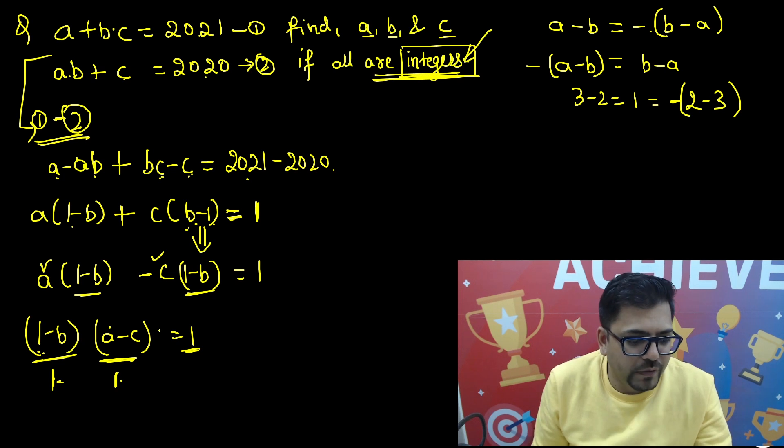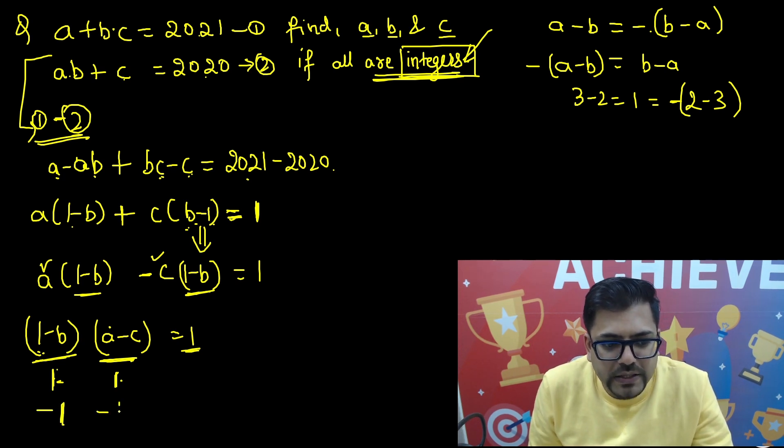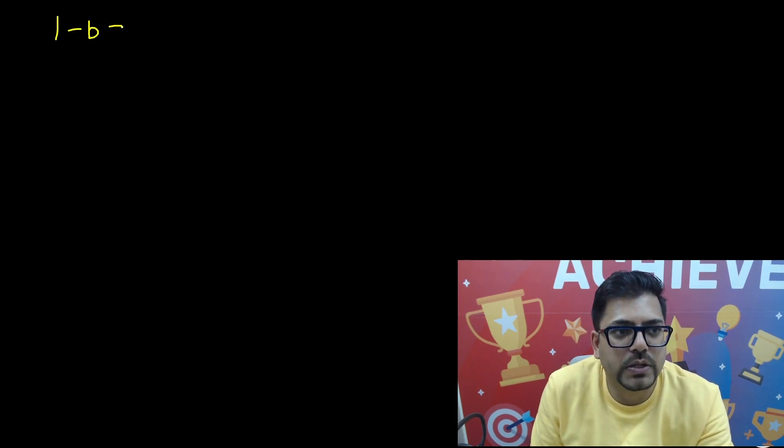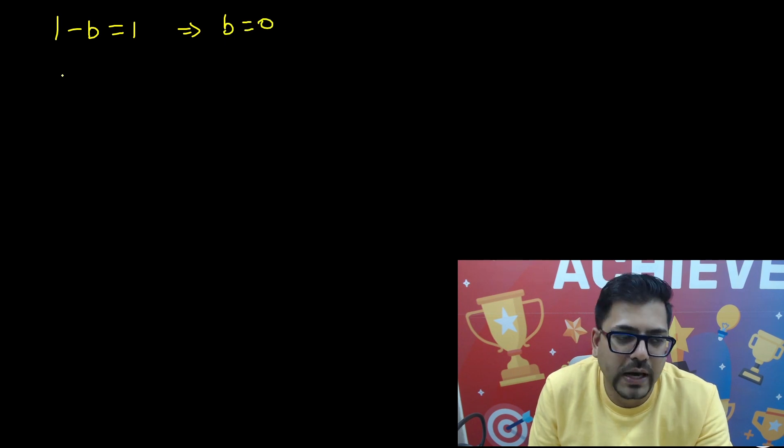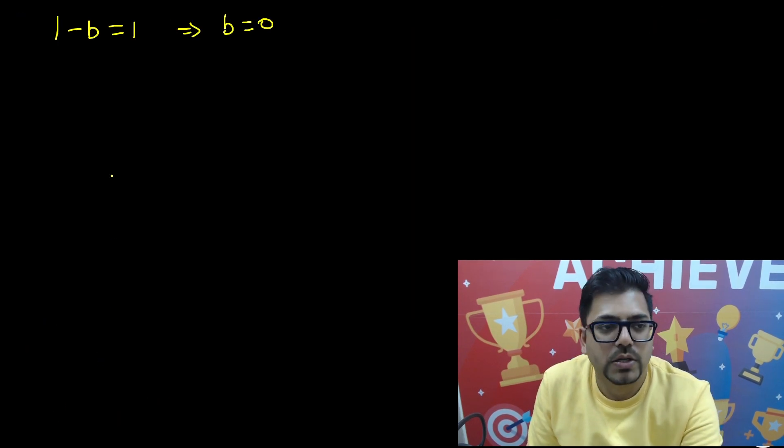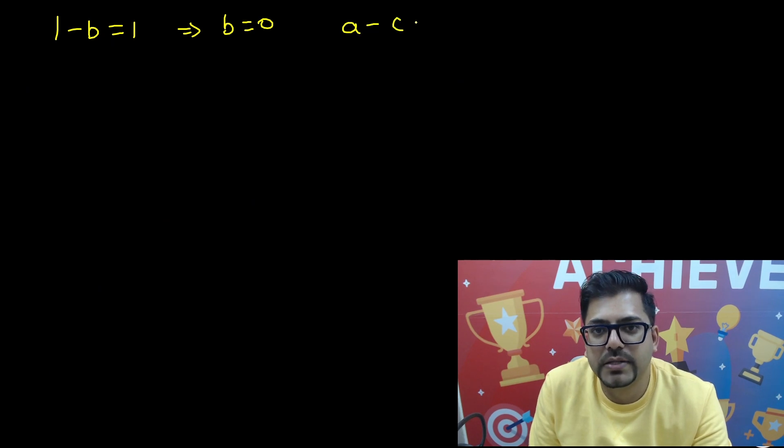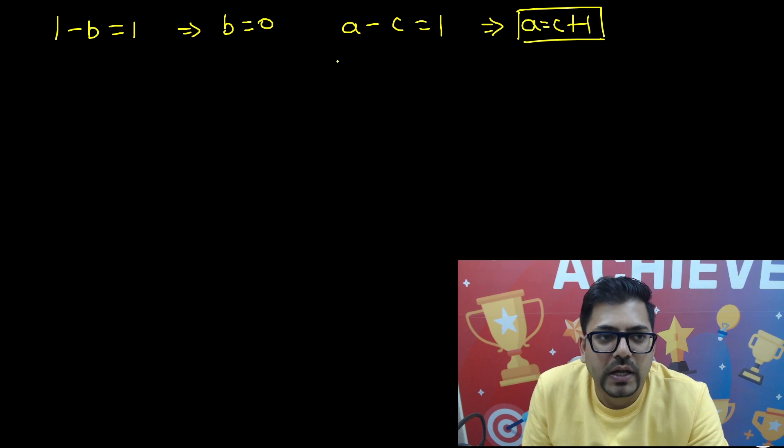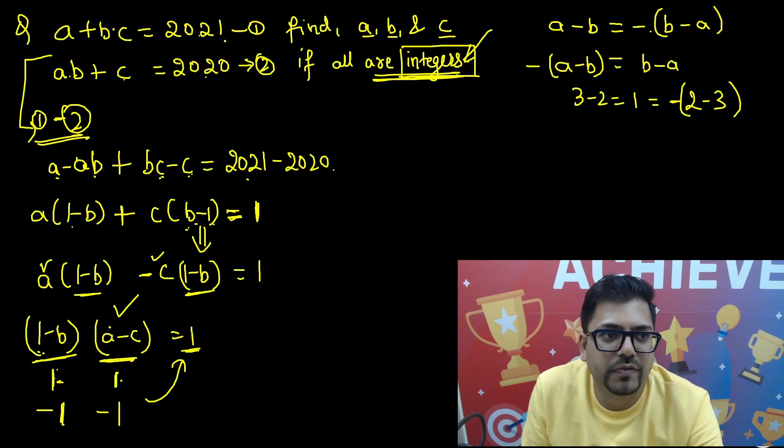Possibility 1: that this is also 1 and this is also 1, so 1 into 1 should be 1. Fraction values are not allowed, so the values are integers. Now moving forward, first 1 and 1 possibility, and another possibility is minus 1 and minus 1. Because if both of them are minus 1, their multiplication also gives me 1. So we will try both of them. So first we will write 1 minus B equals 1. So that gives me the value that B equals 0.